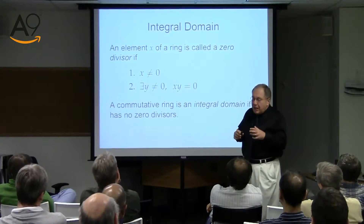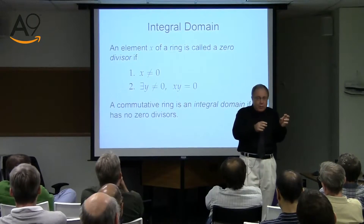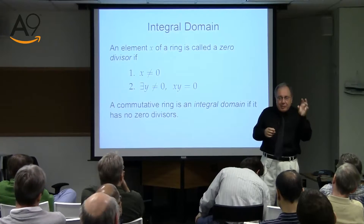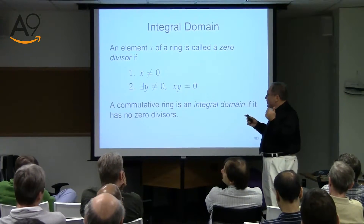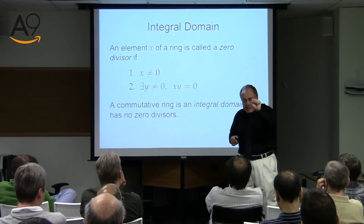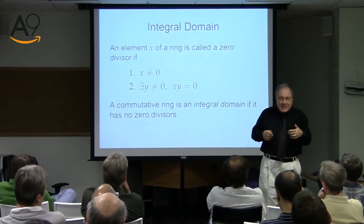Now we come to one more refinement. For those who know C++: you have forward iterators, then you refine to bidirectional iterators, then to random-access iterators. The same thing happens in abstract algebra, except abstract algebra came first. You start with ring, get commutative ring, and then inside commutative ring as a stricter notion is integral domain.